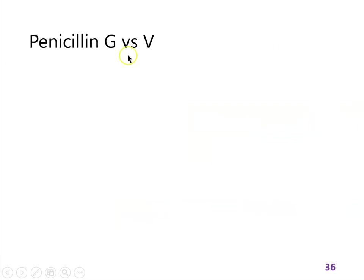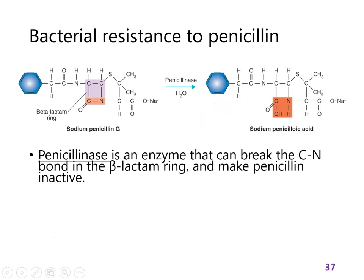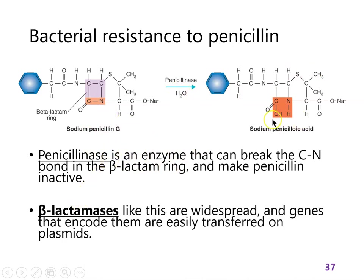Now for resistance to penicillin. There are enzymes called penicillinases that break the bond in the beta-lactam ring, producing a molecule that can no longer react with the transpeptidase — it's just an inert molecule the cell doesn't care about. Penicillinase is a type of beta-lactamase. There are many types of beta-lactam antibiotics and different beta-lactamase enzymes that break them, all breaking that same bond in the ring.